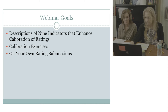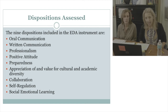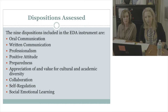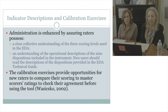The nine dispositions in our tool are listed on this slide. They were identified through a meta-analysis of the research as well as talking with subject matter experts. There are nine dispositions in all with 27 associated indicators. The administration of the instrument is enhanced when you have a clear and collective understanding of our three scoring levels, and it's also important that you have a really strong understanding of the operational definitions of the nine dispositions.